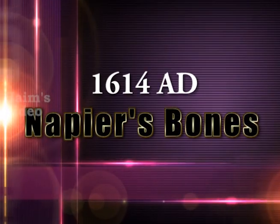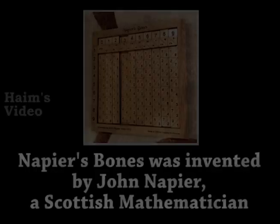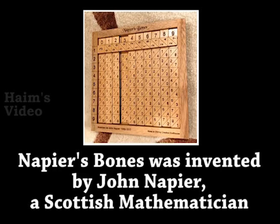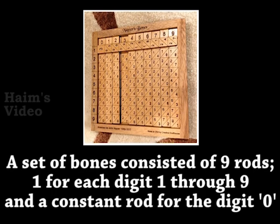1614 AD — Napier's Bones. Napier's Bones was invented by John Napier, a Scottish mathematician. A set of bones consisted of nine rods, one for each digit, one through nine, and a constant rod for the digit zero.